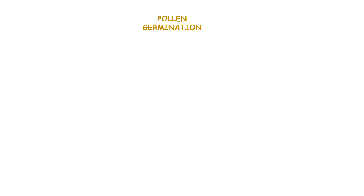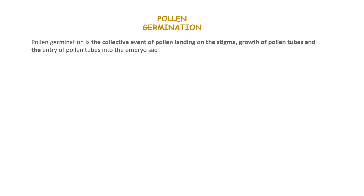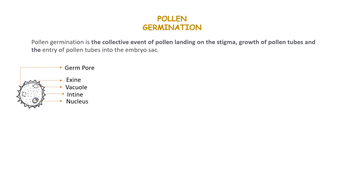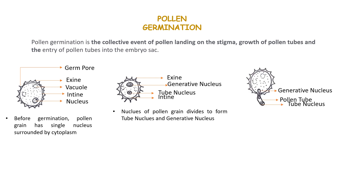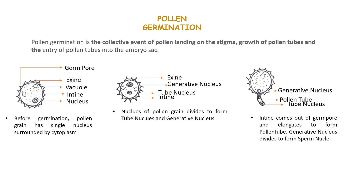Let us now see the germination of pollen grain in detail. Pollen germination is a collective event right from the landing of the pollen grain on the stigma, to the growth of the pollen tubes, and then the entry of the pollen tubes into the embryo sac. In angiosperms, the pollen grains after being liberated from the anther are carried to the stigma where they germinate. The intine comes out of the germ pores as a small projection, and one of the tubes elongates to form what is known as the pollen tube.